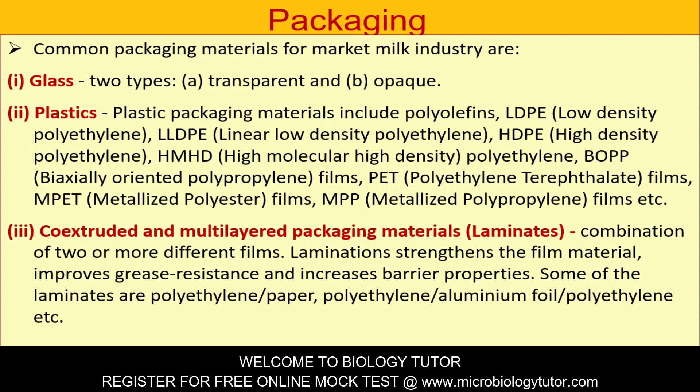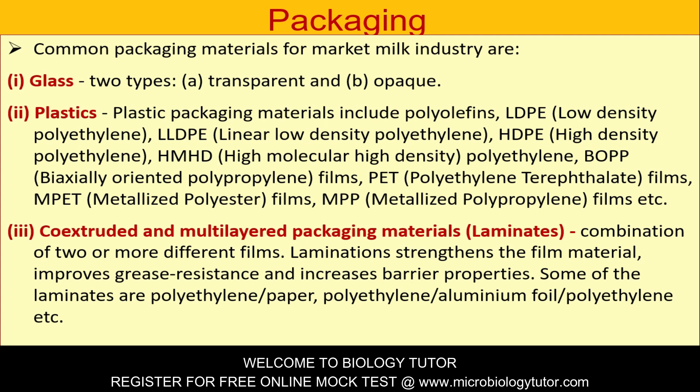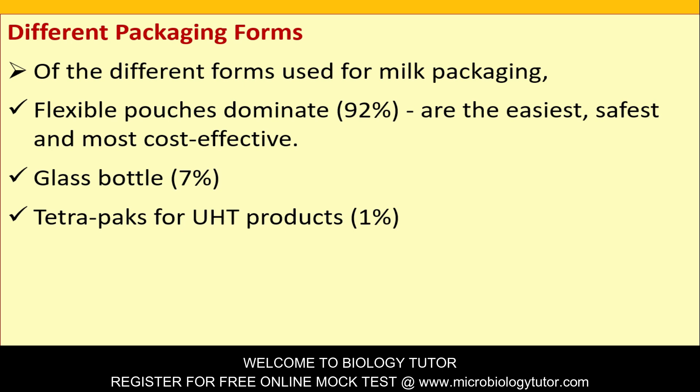Common packaging materials for the market milk industry are: glass (transparent and opaque); plastics including LDPE, LLDPE, HDPE, HMHDPE, BOPP, PET, MPET, MPP etc.; co-extruded and multi-layered packaging materials or laminates (e.g., polyethylene/paper, polyethylene/aluminum foil), which strengthen the film, improve grease resistance, and increase barrier properties. Different packaging forms: flexible pouches dominate at 92% — the easiest, safest, and most cost-effective; glass bottles at 7%; and tetra packs for UHT products at 1%.